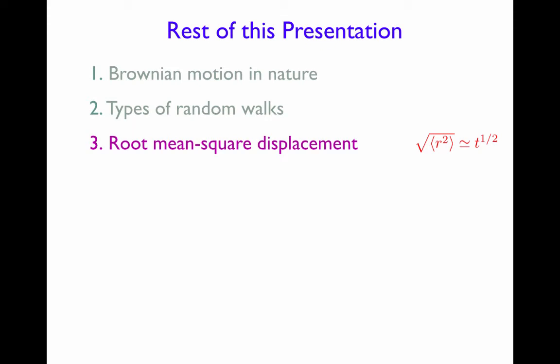Let me now remind you what we're going to cover next. First I'll demonstrate that the root mean square displacement of a random walk scales as the square root of time, a central result, a basic central result in the theory of random walks.